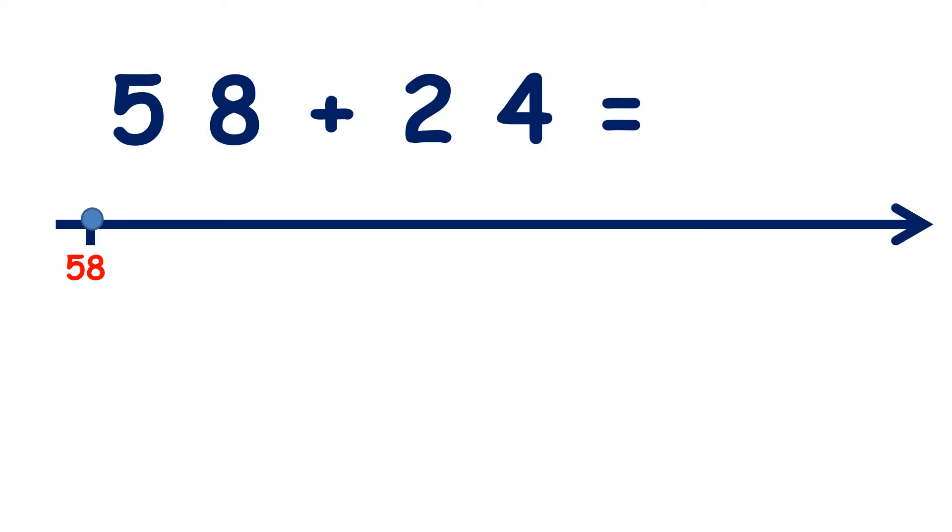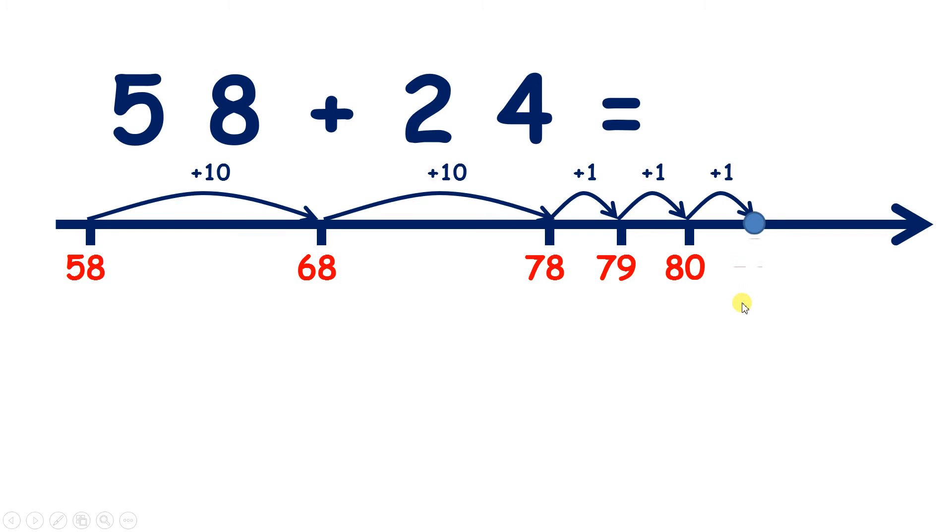Now we have 58 plus 24. So I start on 58, and now what do I do? I'm adding 24, and there are two 10s in 24, so let me add two 10s. One 10 takes me to 68, so two 10s takes me to 78. So I've added two 10s, I've added 20. Now I need to add four units. So if I count on four from 78, I get 79, 80, 81, and 82. So I've added my four units. So 58 plus 24 is 82.